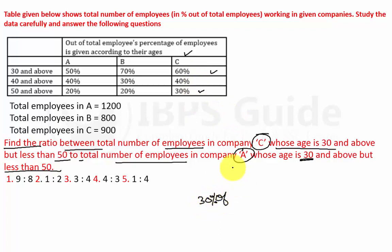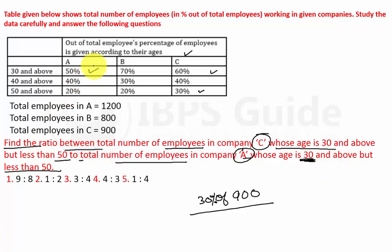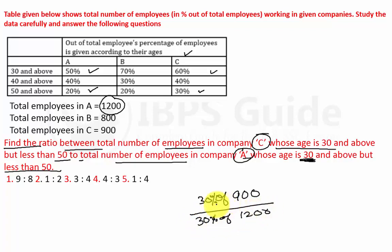30% of Company C's total employees of 900 gives 270. This is divided by the number of employees in Company A whose age is 30 and above but less than 50: 30 and above in Company A is 50%, and 50 and above is 20%, so 50 minus 20 is 30%. 30% of 1200 gives 360.